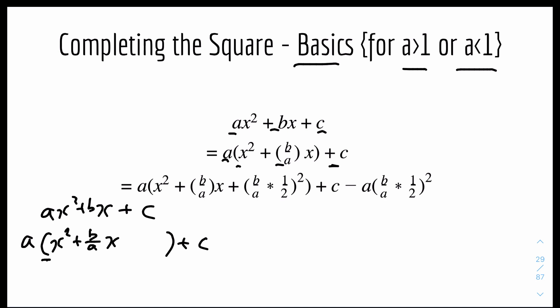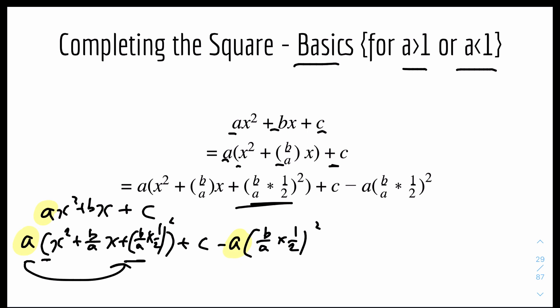It would be (b/a) × (1/2) — because multiplying by 1/2 is the same as dividing by 2 — so the new c coefficient inside the bracket is (b/a ÷ 2)². What you do to the inside, you have to do to the outside. But remember we extracted a from the outside, so you also have to multiply a by this new term on the outside, so that the expression stays in equilibrium.